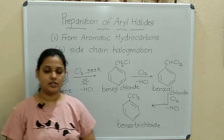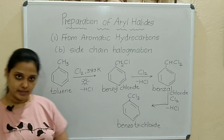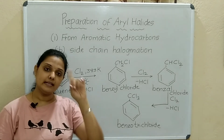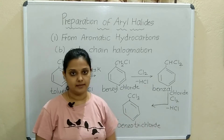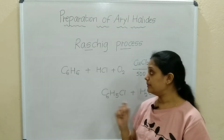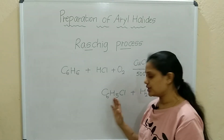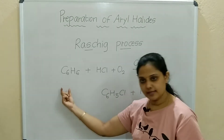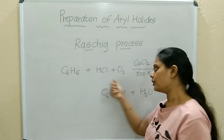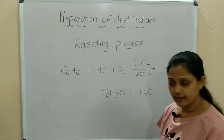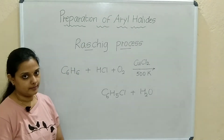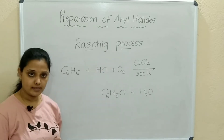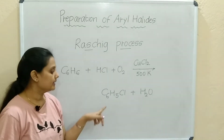That finishes the first preparation from aromatic hydrocarbons: nuclear halogenation (halogen directly on the ring) and side chain halogenation (halogen in the side chain). One more name reaction is the Rastig process for preparation of chlorobenzene: benzene is treated with hydrochloric acid and oxygen in the presence of copper chloride at 500 Kelvin, giving chlorobenzene and water as byproduct.